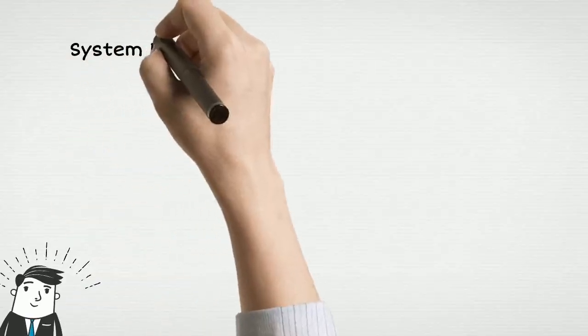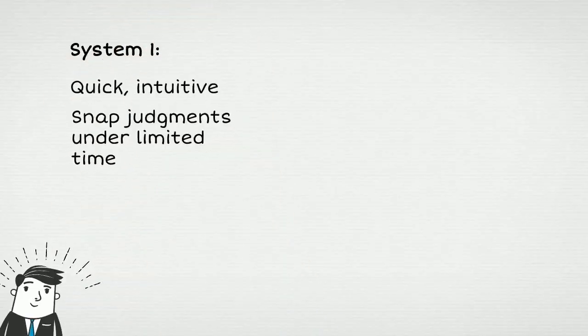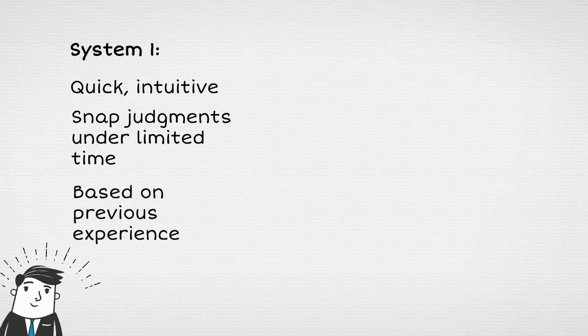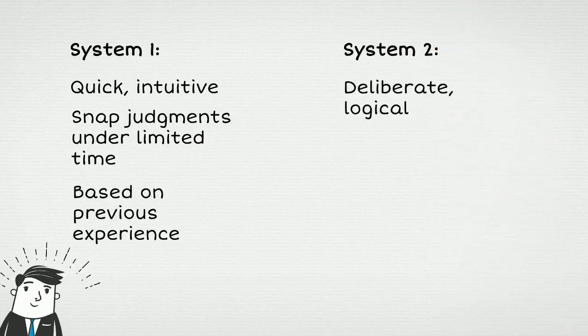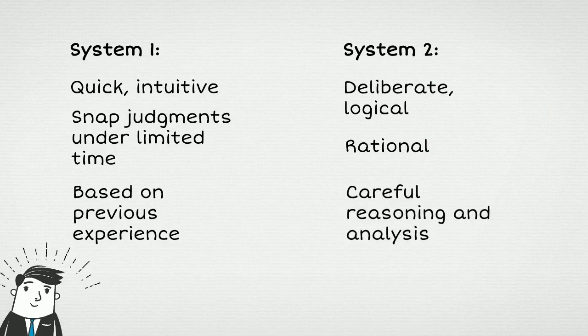System 1 thinking is quick and intuitive. It is designed for snap judgments under uncertainty and limited time based on our previous experience. System 2 thinking is the deliberate logical rational system that applies careful logical reasoning and analysis to arrive at decisions that are rational and well justified.